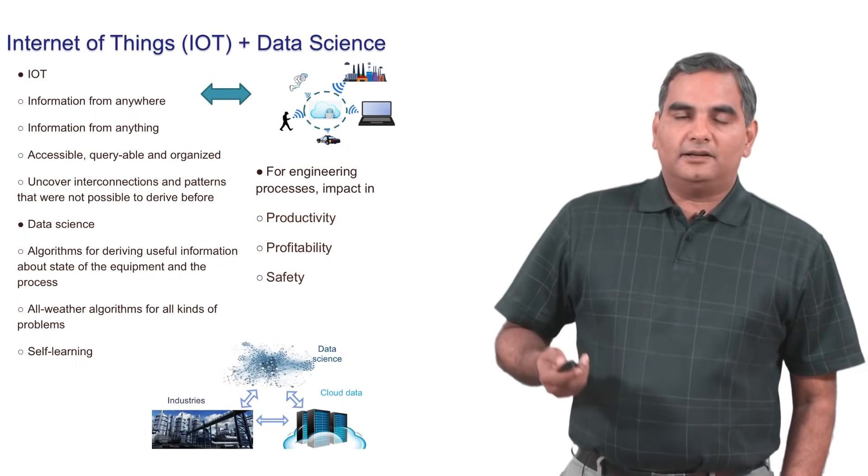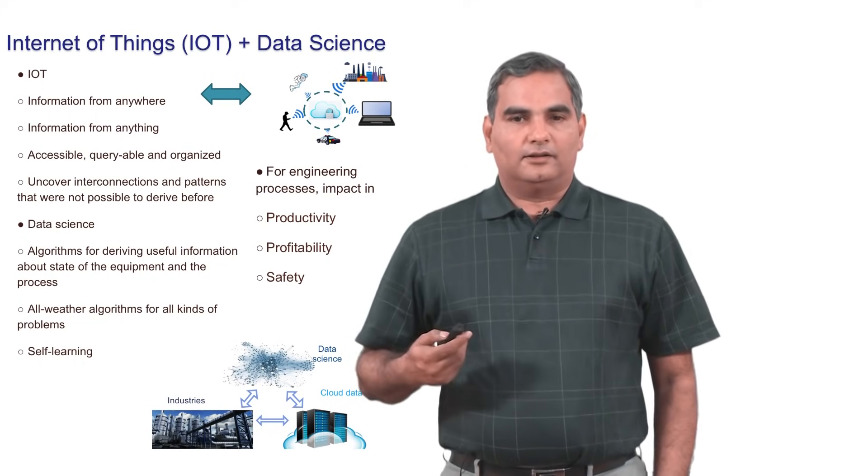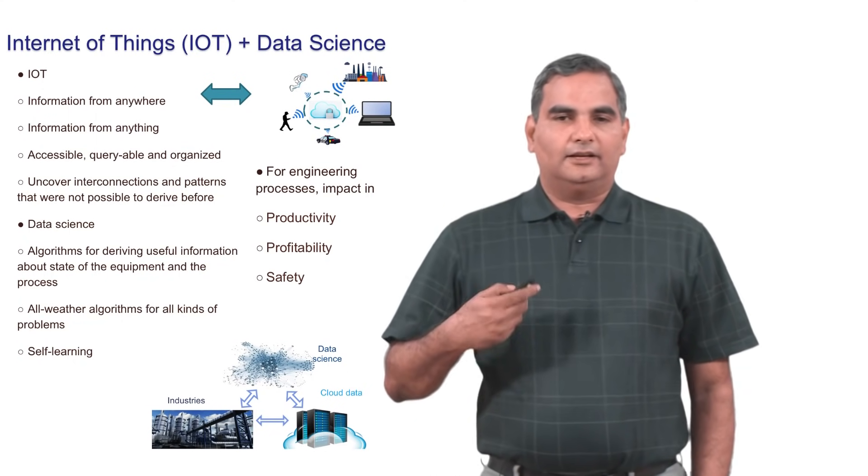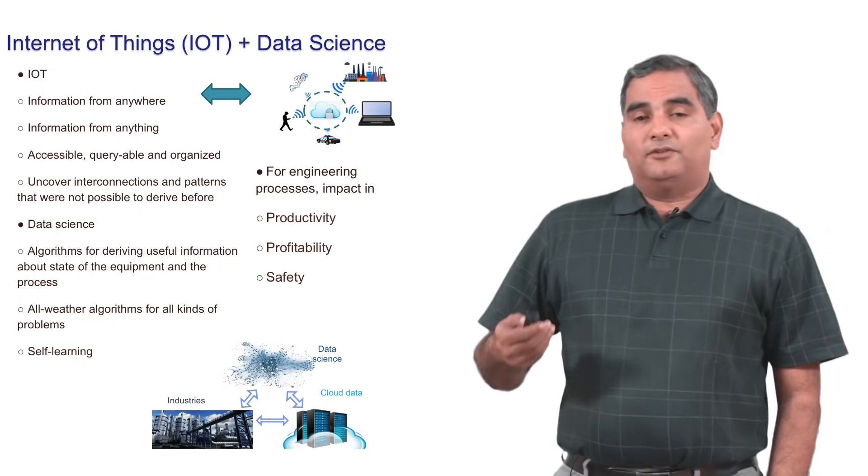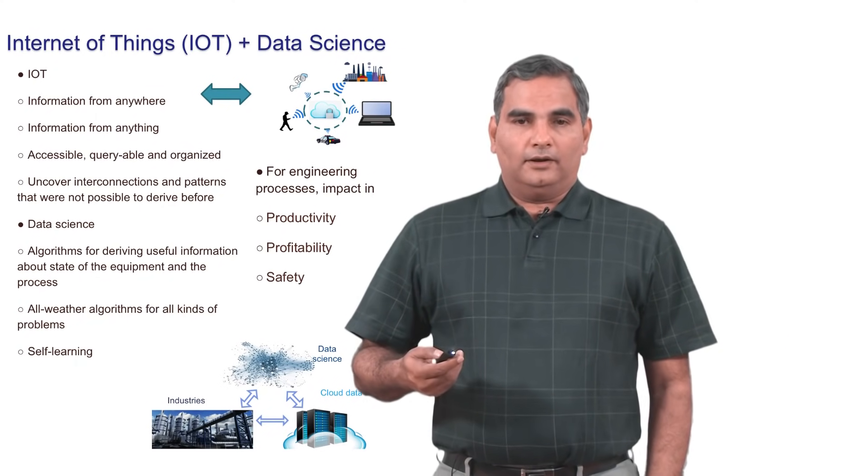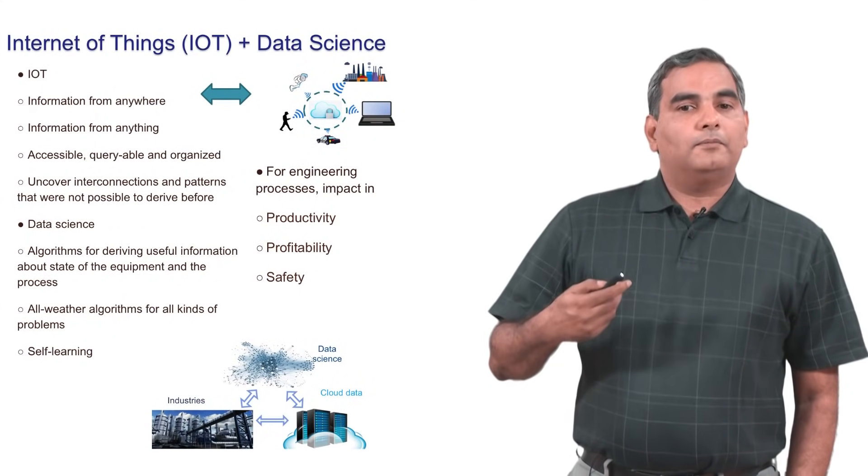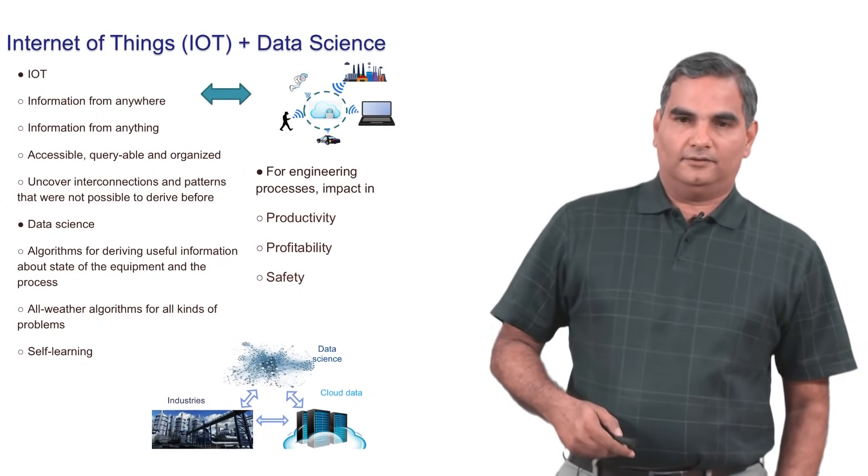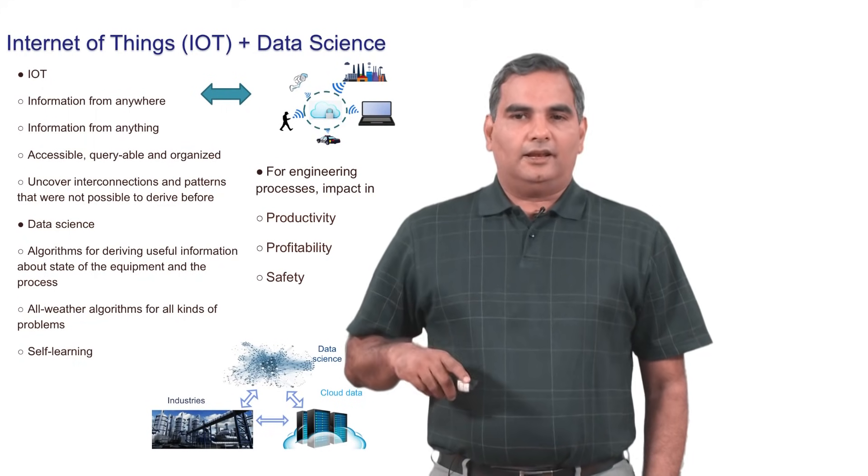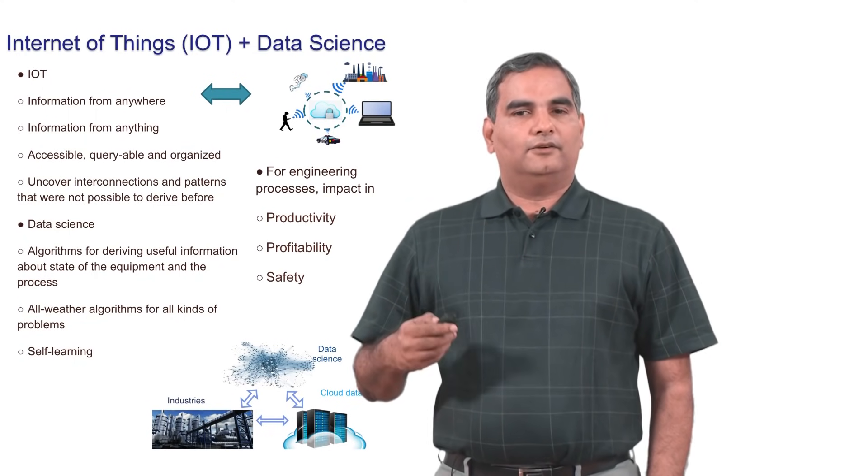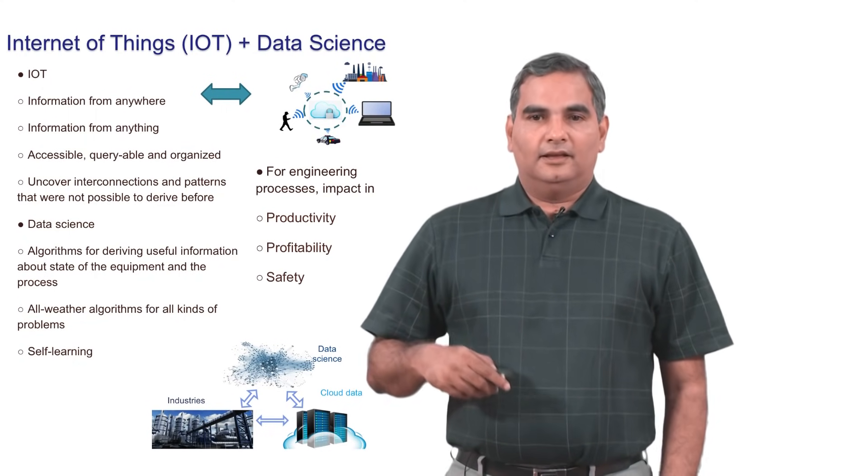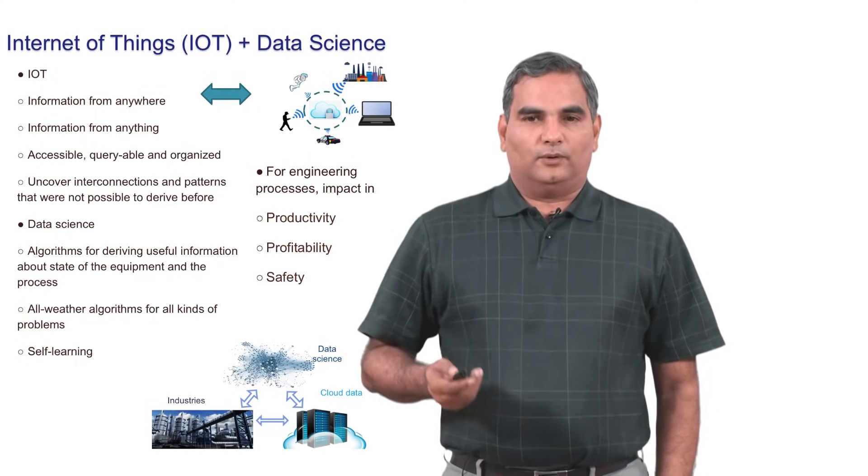Now the excitement is that there are all kinds of algorithms for all kinds of problems that you can think about in data science. And some of these algorithms are self-learning and so on. So there is a lot of excitement about how to use these algorithms from an industrial perspective. So from a purely engineering viewpoint, you could think of using this data and data science for productivity, profitability, safety, and so on.